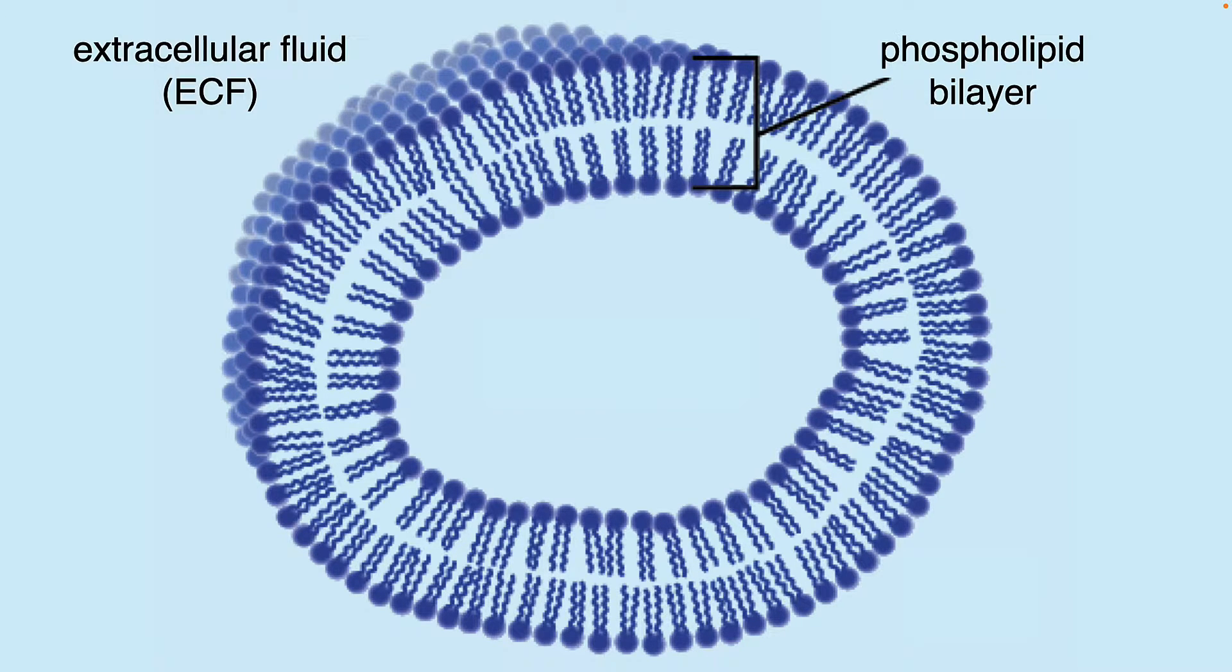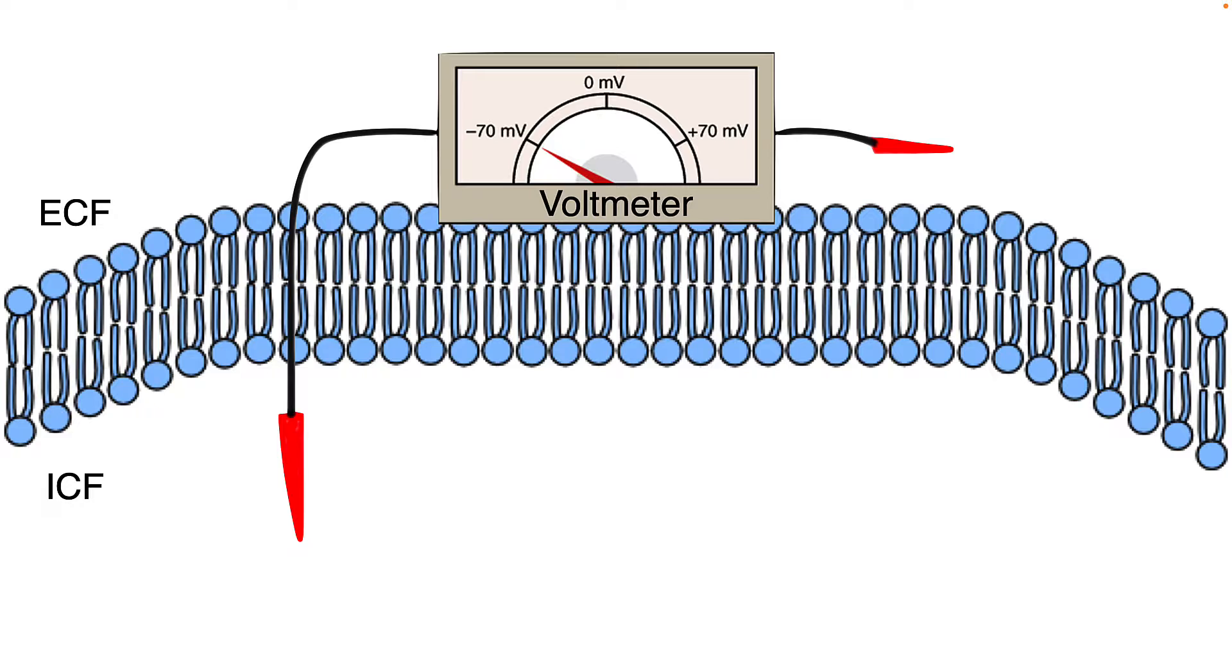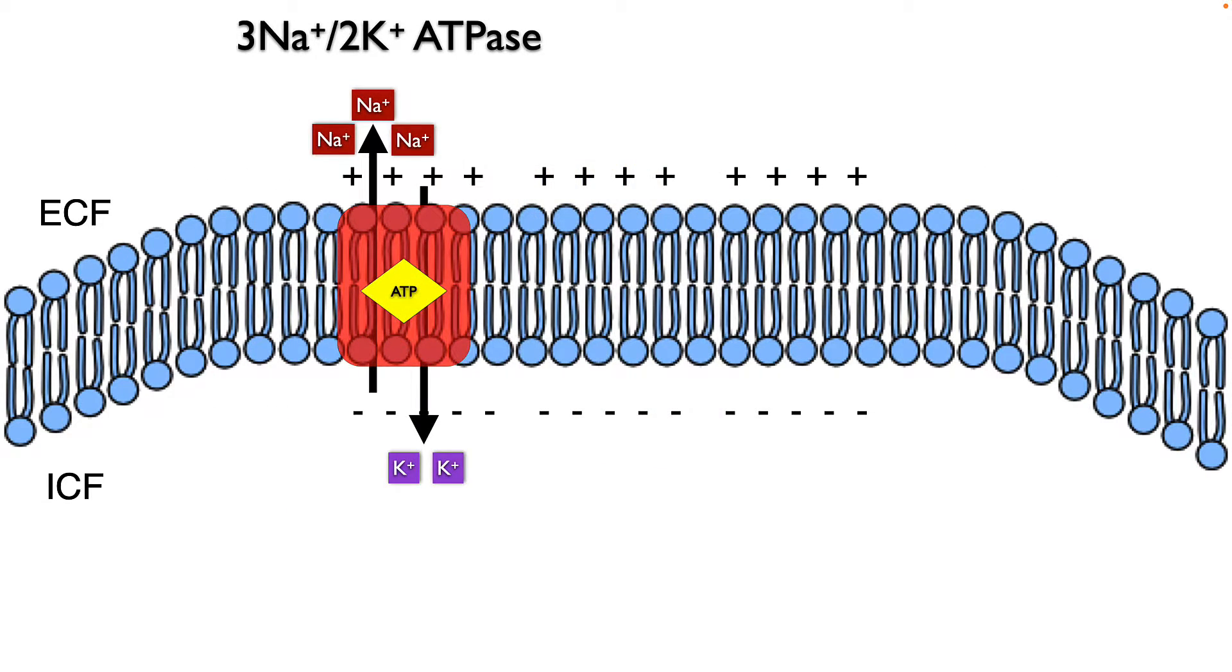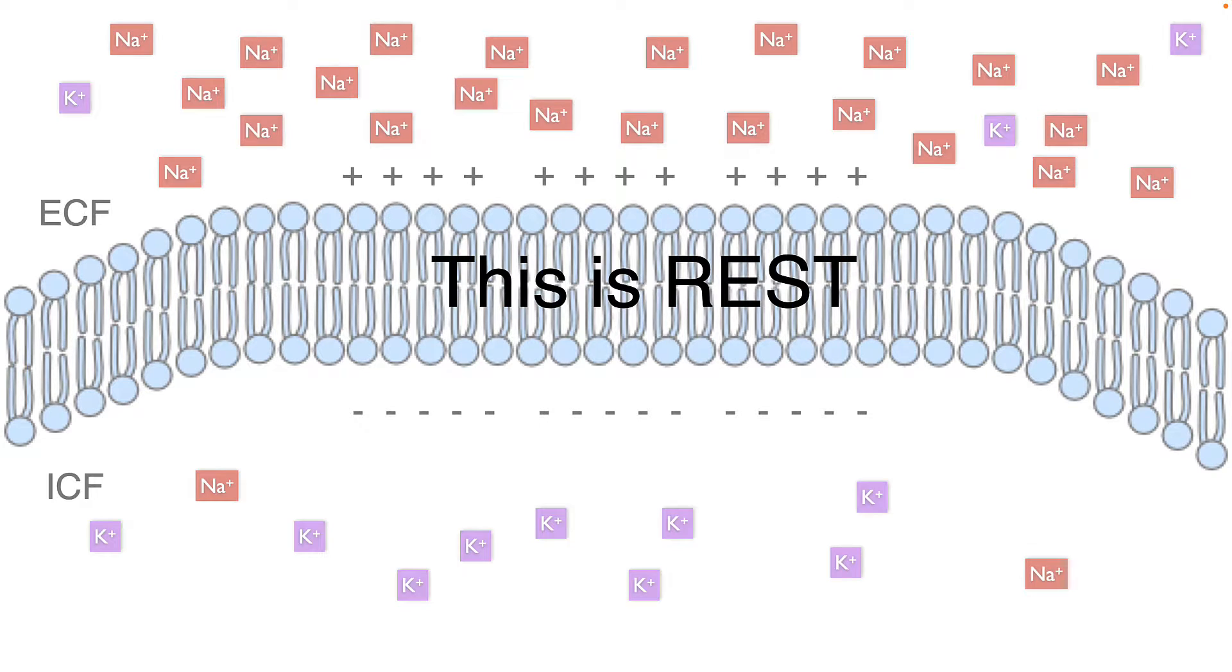Phospholipid bilayer separates the extracellular fluid, the ECF, from the intracellular fluid, the ICF. Now, if you throw a voltmeter across that membrane, you're going to measure an electric potential difference of minus 70 millivolts inside negative. Just like a battery separates charge, so does the membrane. We've got that three sodium, two potassium pump. Every time an ATP gets hydrolyzed, three ions of sodium get pumped out, while two ions of potassium get pumped in. And we also have potassium leak channels, allowing potassium to flow down their gradient. So this is the setup for these two ions. And this is rest.